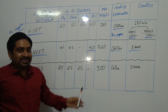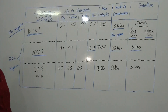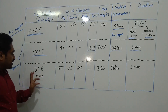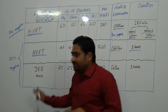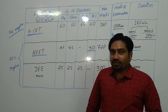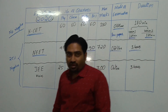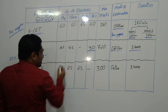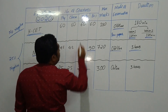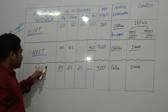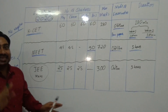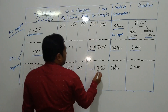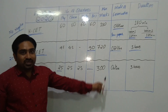Next is JEE — previously known as the IIT examination, now called the Joint Entrance Examination. JEE is conducted in two phases: JEE Main and JEE Advanced. Students who qualify JEE Main can appear for JEE Advanced and get seats at IITs. For JEE Main, there are 25 questions each from physics, chemistry, and mathematics. There is no biology. The total maximum marks are 300.